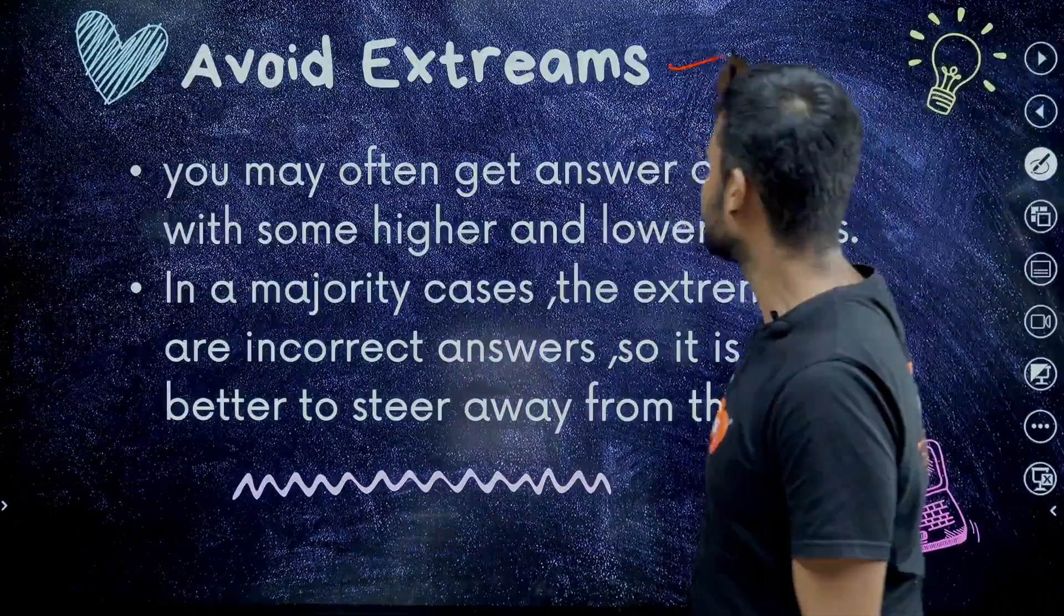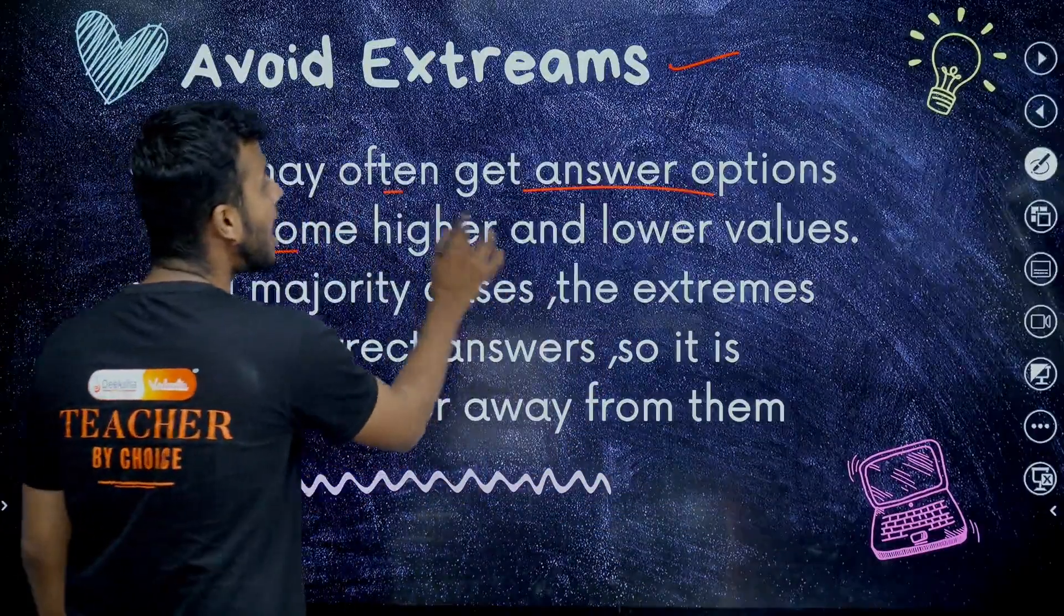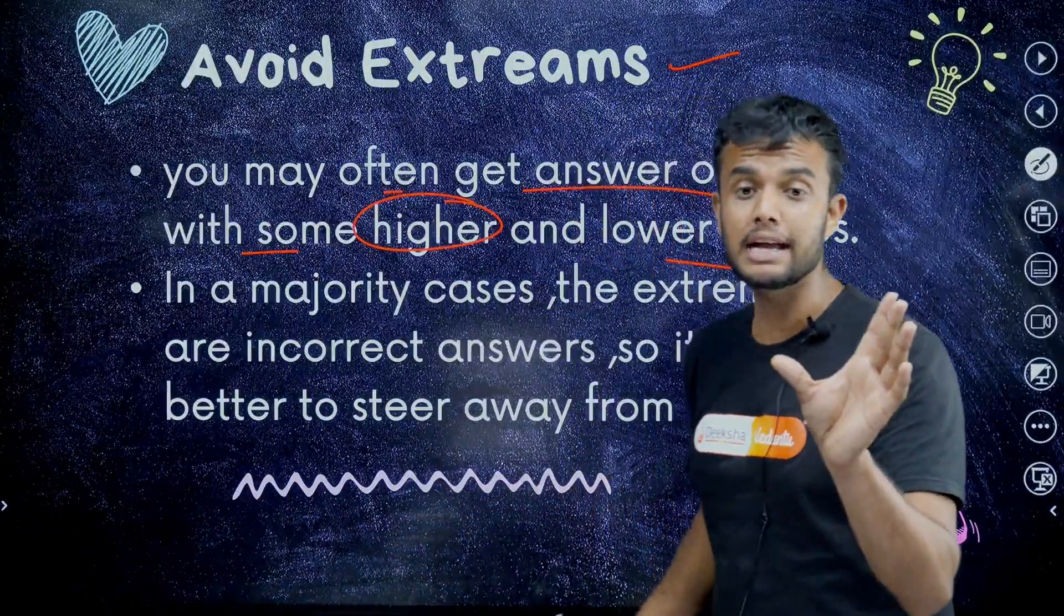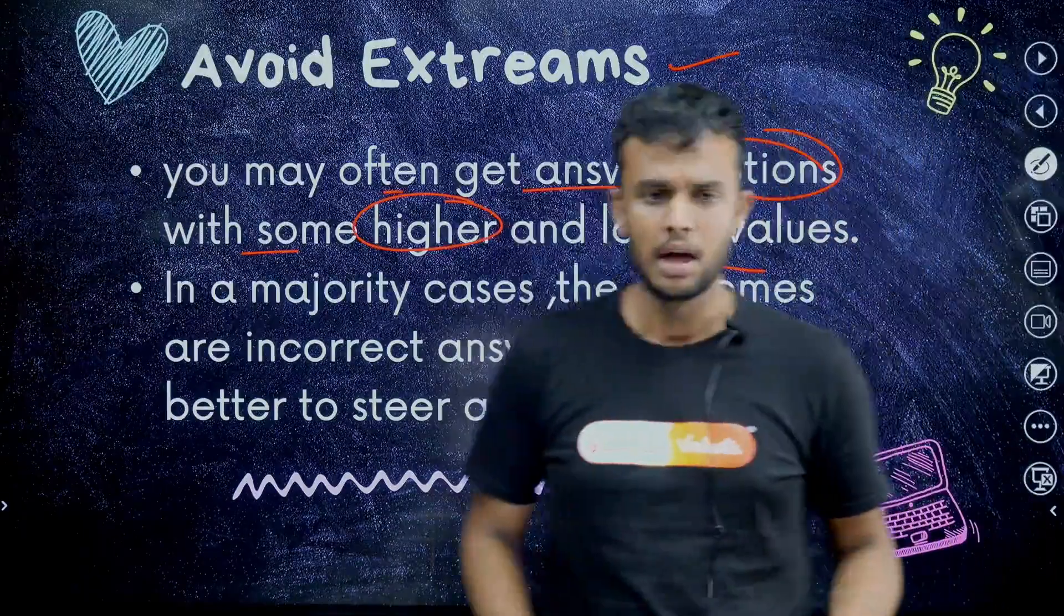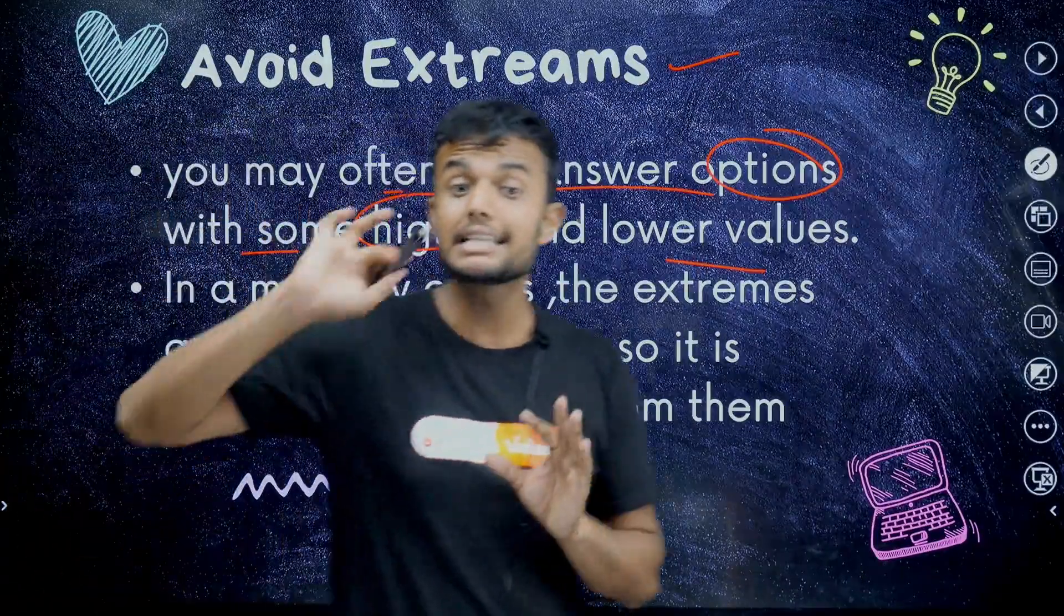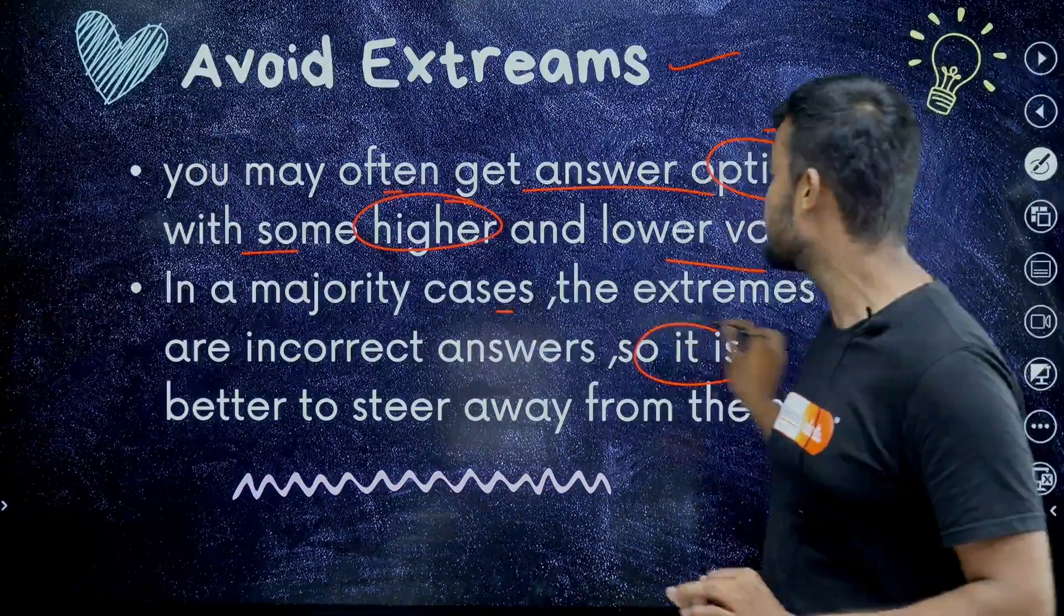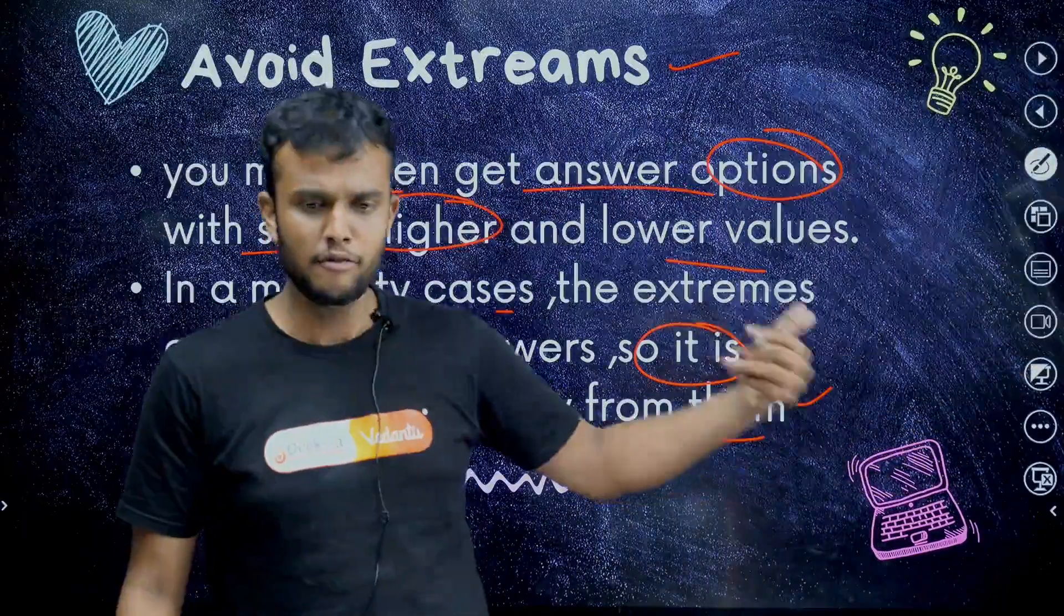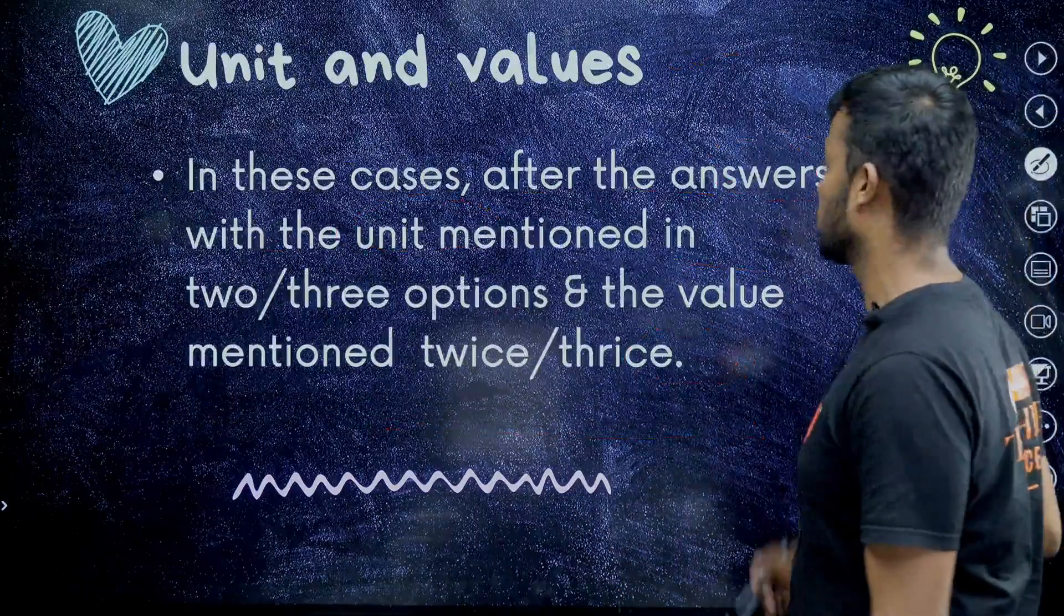Next one: avoid extremes. What is this avoid extremes? First important point: you may often get answer options with some higher and lower values. Avoid these extremes. You may often get answer options with some higher and lower value. And also in majority cases, the extremes are incorrect answers. The extremes are there, majority of your values are incorrect. So it is better to steer away from them. Higher values, lower values, always see it as mid value.